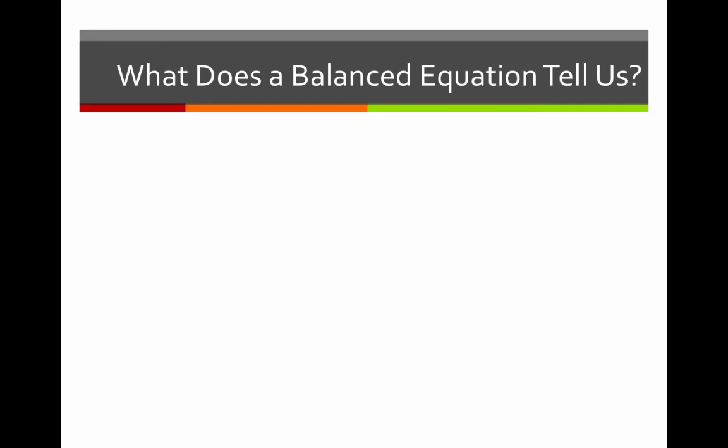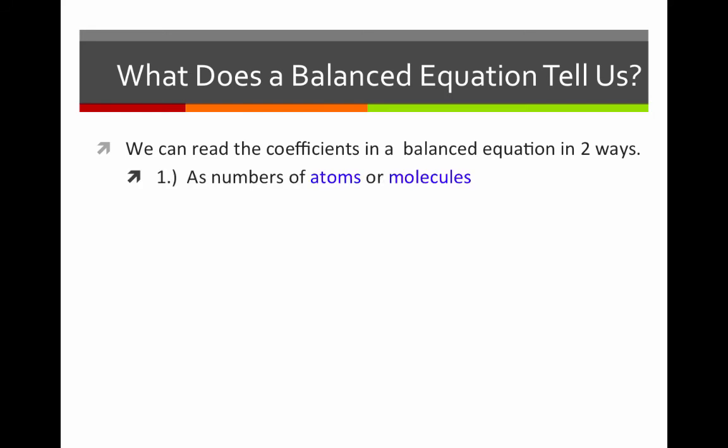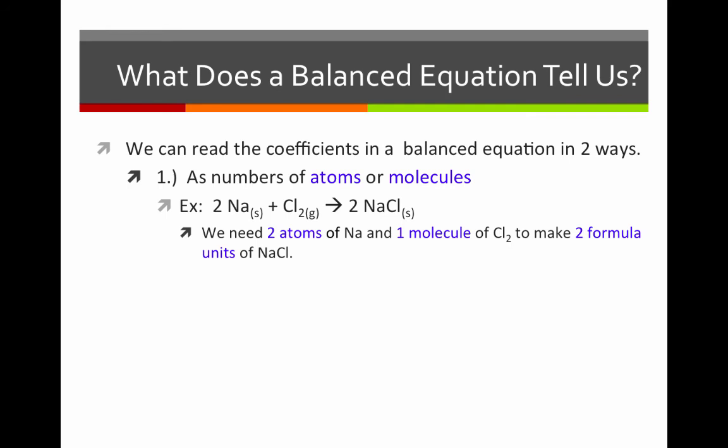So, what does a balanced equation tell us? We can read the coefficients in a balanced equation in two ways. First, as number of atoms and molecules. For example, this balanced equation tells us that we need two atoms of sodium and one molecule of chlorine to yield two formula units of NaCl.